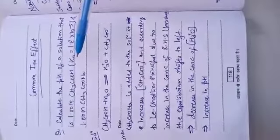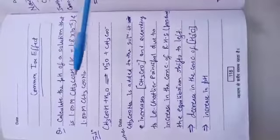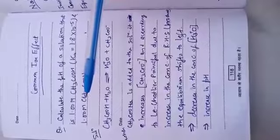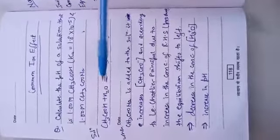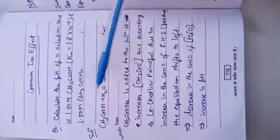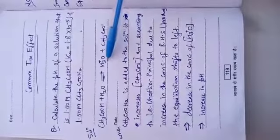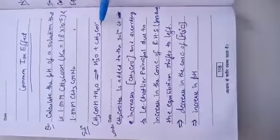The dissociation constant for acetic acid is 1.8 into 10 to the power minus 5, and the solution also contains 1.0 M sodium acetate. Now the solution of acetic acid in water will give in equilibrium CH3COOH + H2O gives H3O+ and CH3COO-.